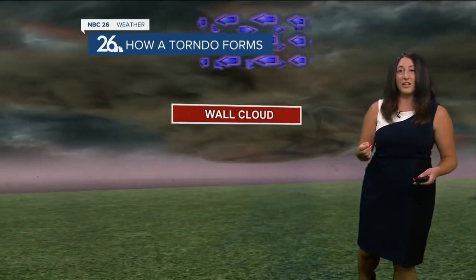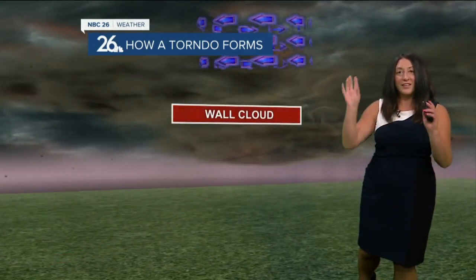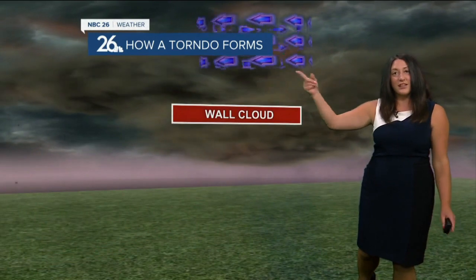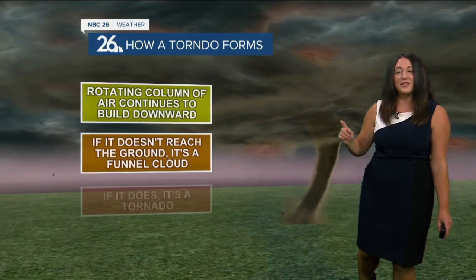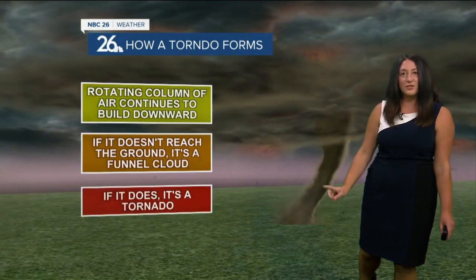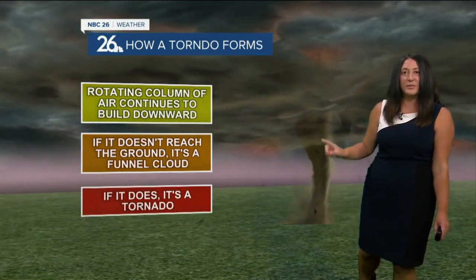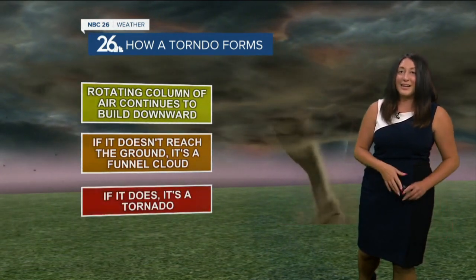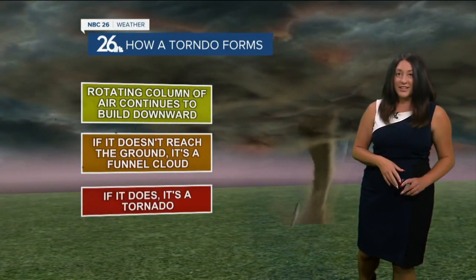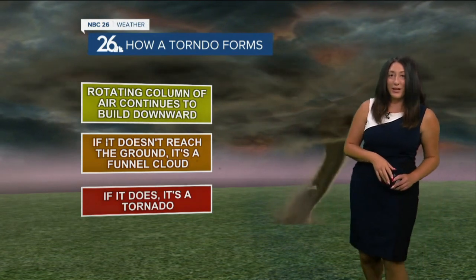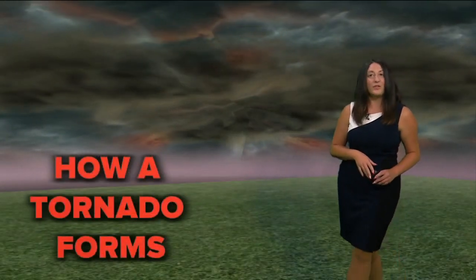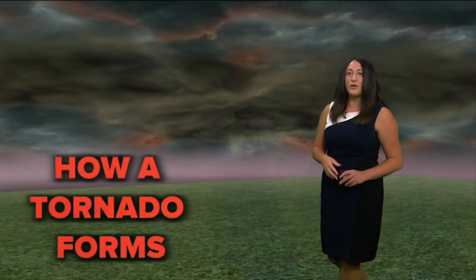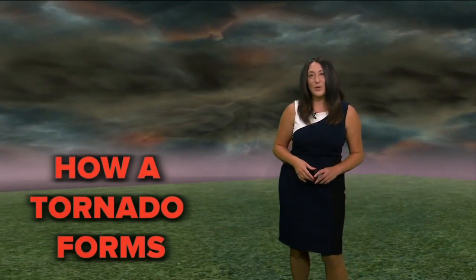Then you'll start to see a wall cloud form. That is that rotating cloud where you don't see a funnel yet. Then the funnel starts to come out of it, and as it does, it can lift and touch the ground and go back up again. But when that funnel cloud is on the ground, that is a tornado — and that is how it forms. We've seen quite a few of those over our area in the past few days.